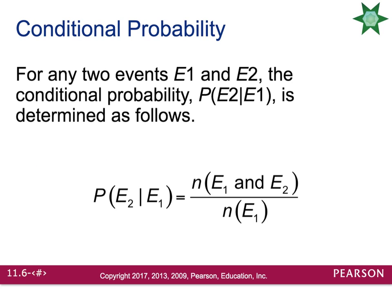The formula may seem a little confusing, but it's not as bad as it seems. For any two events, event 1 and event 2, the conditional probability that event 2 happens given that event 1 has already occurred is determined by the following. In the numerator, find the total number of items that satisfy both event 1 and event 2 — in the card situation, that would be all cards that are clubs and black, which is where the 13 came from. The denominator is all the cards satisfying event 1, which is the 26 black cards. They use N because they want the count, not the probability — number of black clubs over number of black cards — then reduce the fraction.